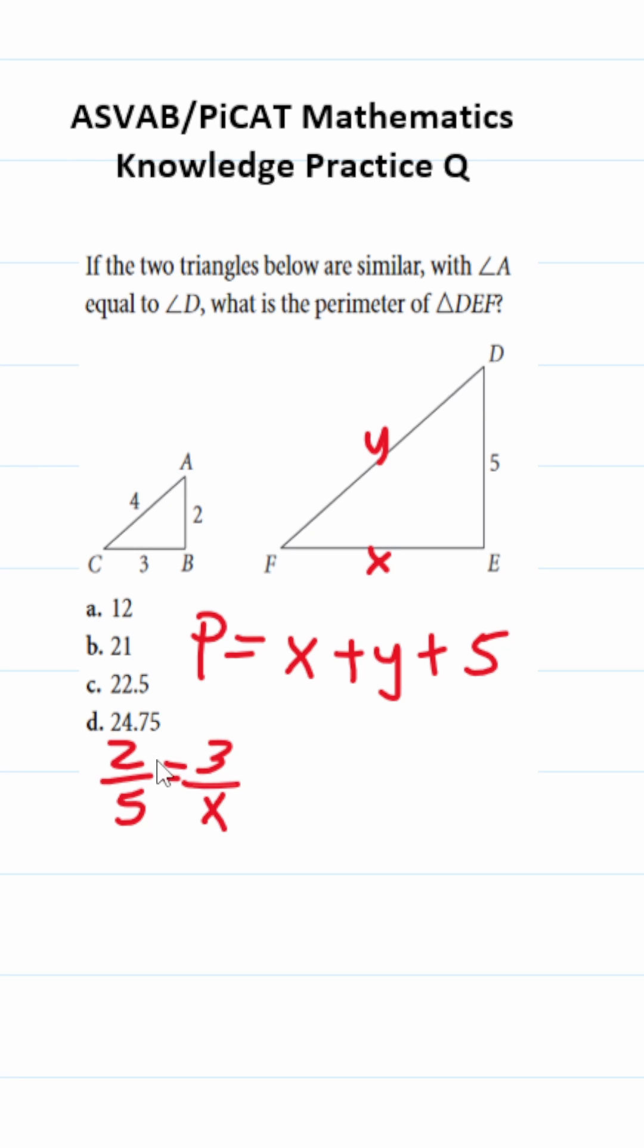This is going to be equal to 3 over x. Cross multiply: 2x equals 15. Divide both sides by 2, x equals 7.5.